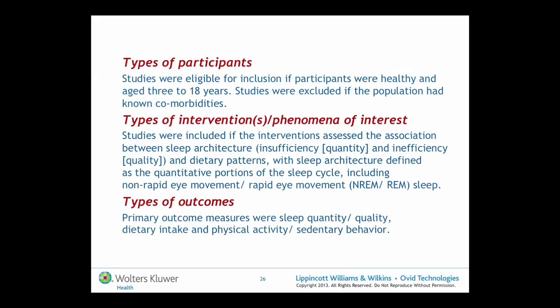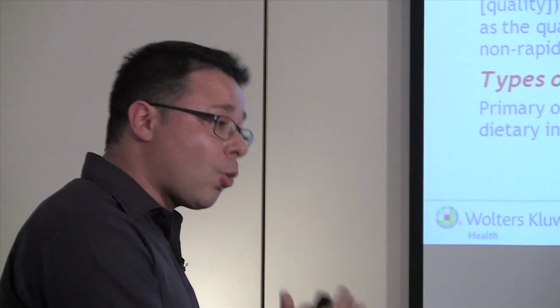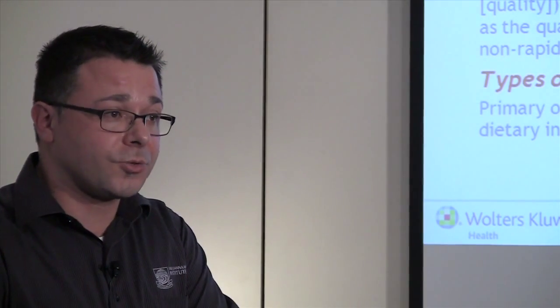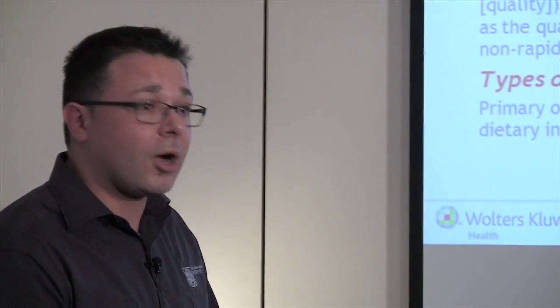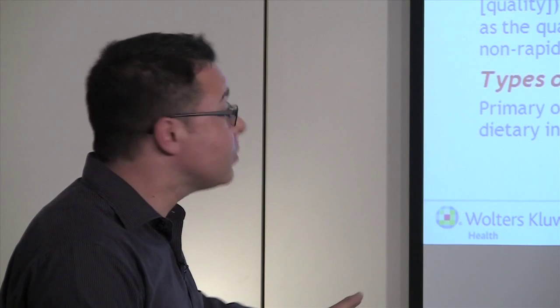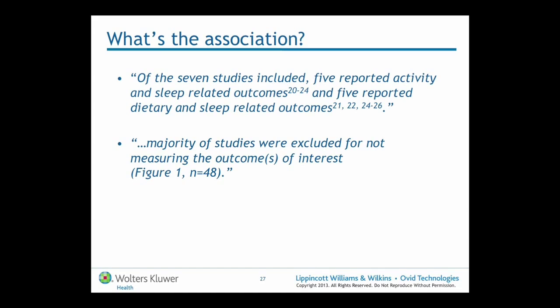Most importantly, here's where alarm bells start ringing in terms of not following the PICO mnemonic. The primary outcome measures were listed as sleep quantity, quality, dietary intake, physical activity, and sedentary behaviour — but this isn't actually the outcome of interest in this association. There's been a mix-up of the dependent and the independent variables. Sleep quantity is the exposure, not the outcome. What I'd expect to see is sleep quantity as the exposure — measured in hours per night or quantiles such as less than five hours, five to eight hours, or greater than eight hours — associated with dietary and physical behaviours as outcomes.